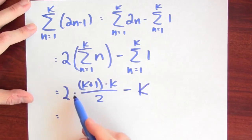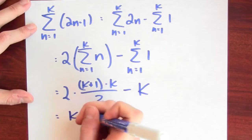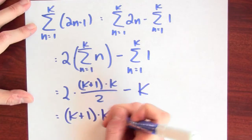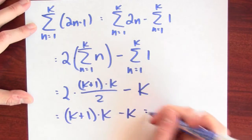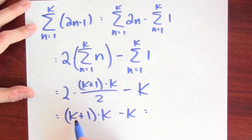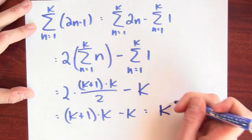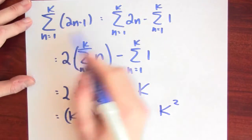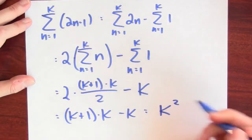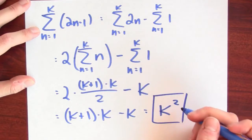Now this is 2 times something divided by 2, so this is k plus 1 times k, and then minus k. Well if I expand this out, I've got k plus 1 times k minus 1 times k. This is k squared. So the sum of the first k odd numbers is k squared.